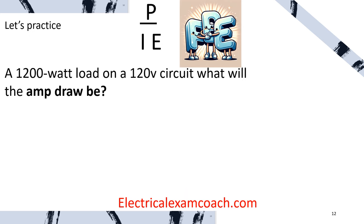In our first scenario, we have a 1200-watt load on a 120-volt circuit. What will the amp draw be? We plug in wattage and voltage and divide to get 10 amps. Next: a 1200-watt load with a 10-amp draw — what is the voltage? Divide 1200 by 10 to get 120 volts. And if we have a 120-volt circuit with 10 amps, multiply 10 by 120 to get 1200 watts.